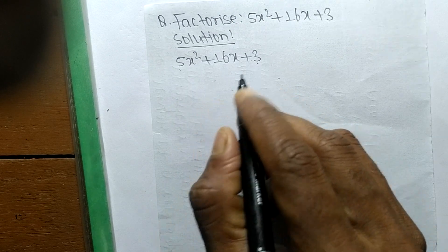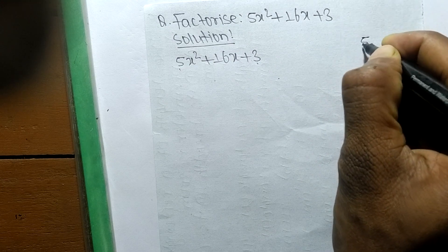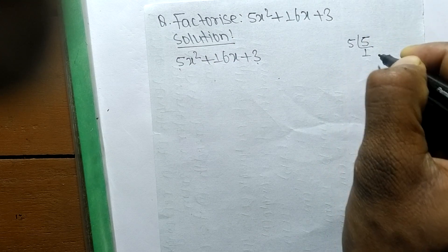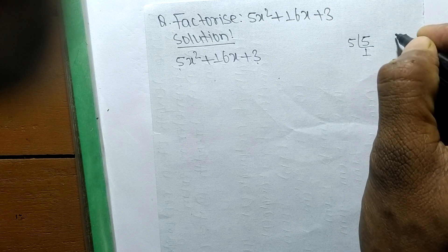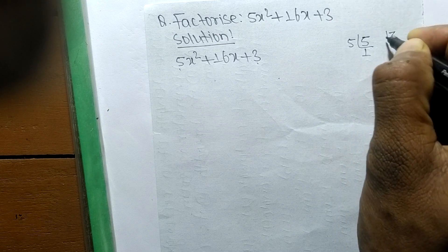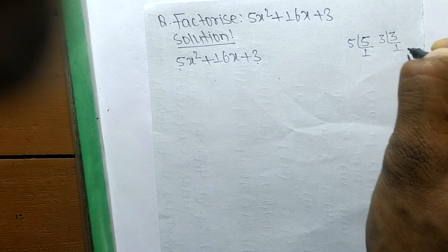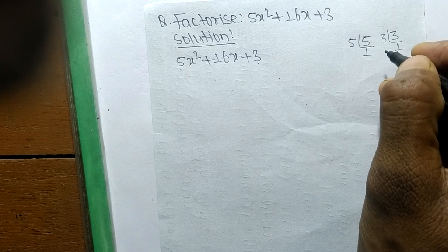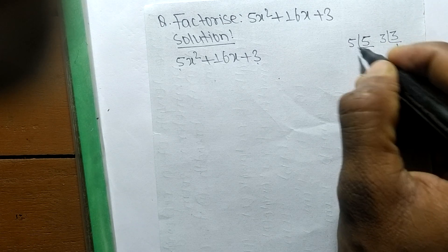The prime factors of 5 is 5 × 1, and the prime factors of 3 is 3 × 1. So we have the numbers here: 5, 1 and 3, 1.